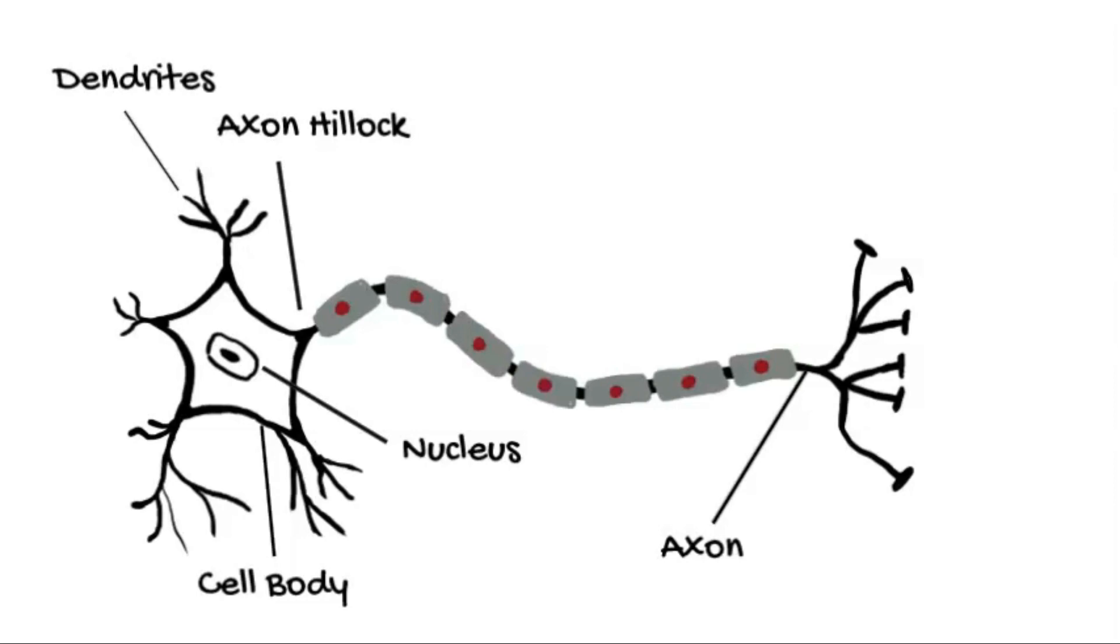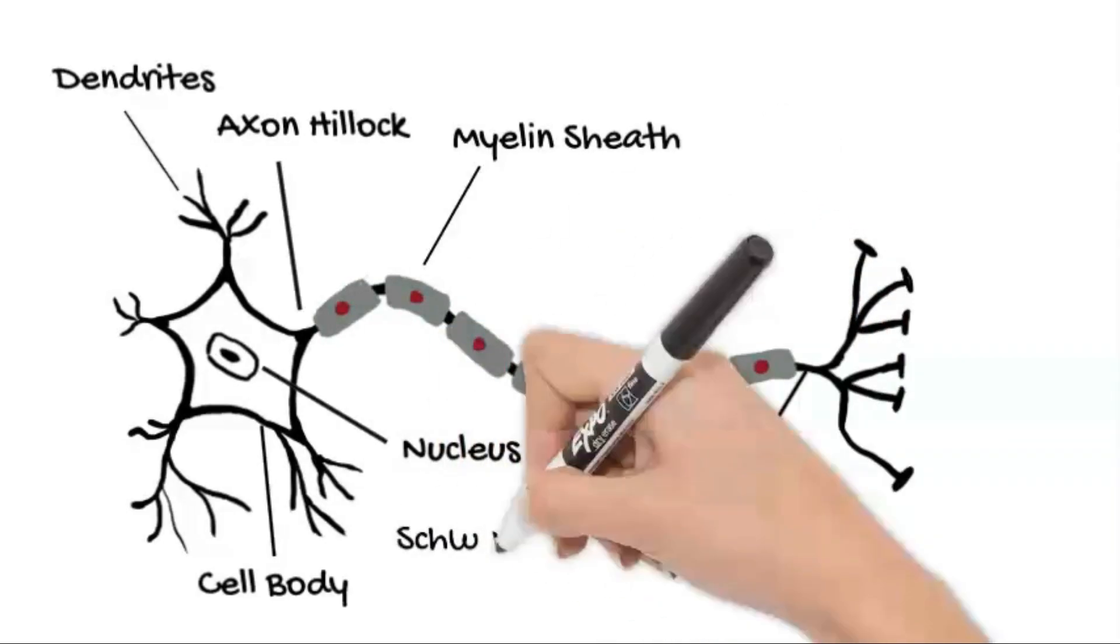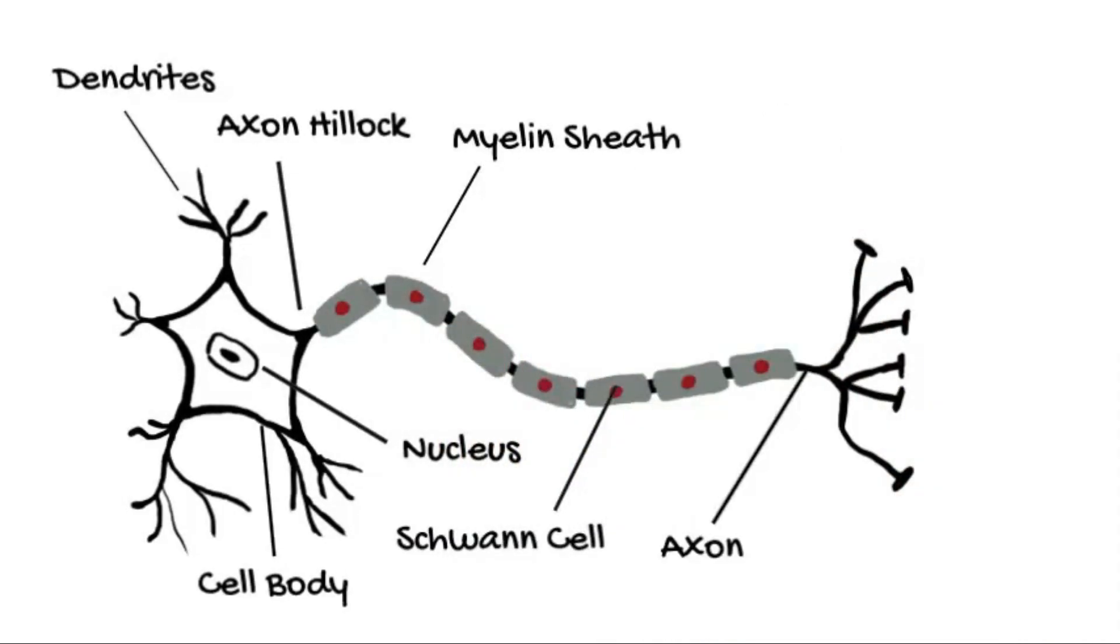To help the axon communicate electrical signals quickly and reliably, it is insulated by a fatty substance called the myelin sheath, a bit like the plastic coating around a wire that carries electrical signals in your house. Schwann cells produce the myelin sheath that wraps around axons.